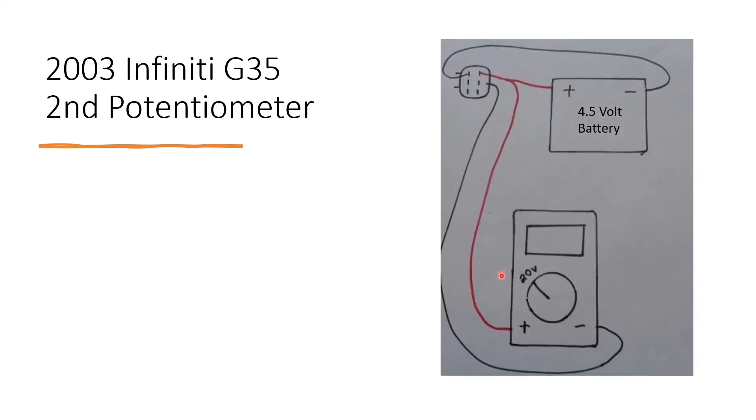The multimeter should still be set at 20 volts just like this. Then the positive from both the battery and the multimeter should connect up to the top right pin. Then the negative from the battery should connect up to the top left pin, and the negative from the multimeter should connect up to this middle right pin.